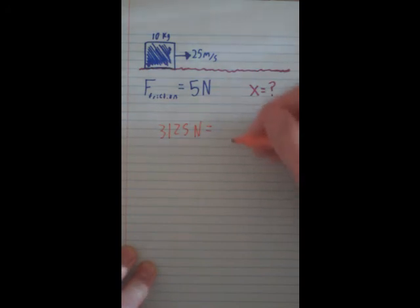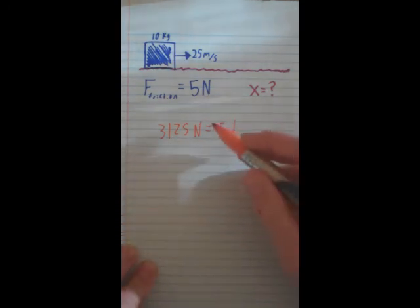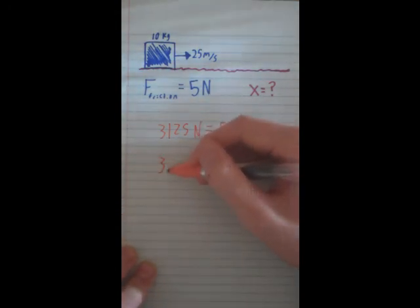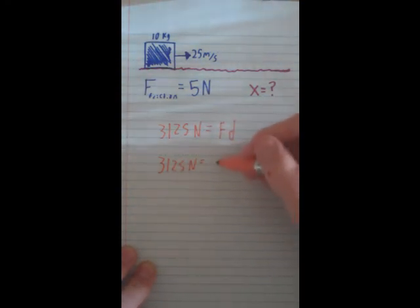And we also know that work equals force times distance. Now the friction is doing a force of 5 newtons. So basically all we have to do is take our energy and set it equal to friction times distance. And we have to find out what distance it will go.